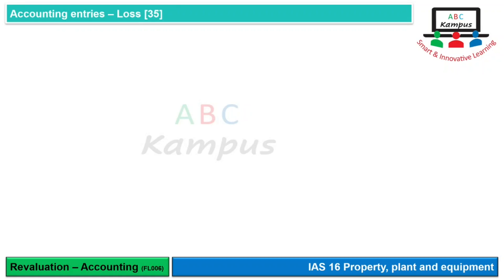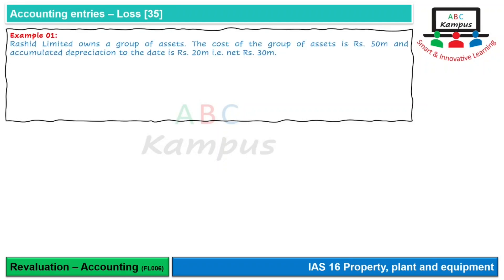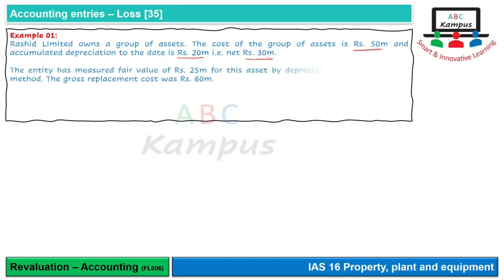Example one: Rashid Limited owns a group of assets. Cost of the group of assets: rupees 50 million, accumulated depreciation to date: rupees 20 million, net asset: 30 million। Entity ने fair value measure की which is rupees 25 million - यानि 5 million का loss हो गया। By depreciated replacement cost method, gross replacement cost 60 million है। यह data given होने पर proportionate restatement possible होगी।